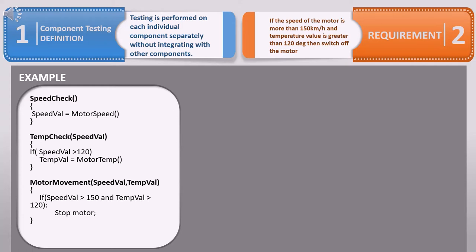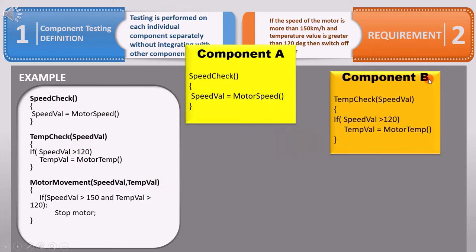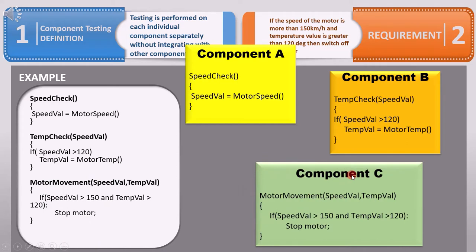Now if we were to perform component testing on this code, we would have to separate each component. This would be component A, where we only test the motor speed. The second function is component B, where we only test the temperature value. And the third function is component C, where we test the motor movement. So there are three components in this code that need to be independently tested. Under component testing, there is no relationship between component A and B, or A and C — they are all just individual units.